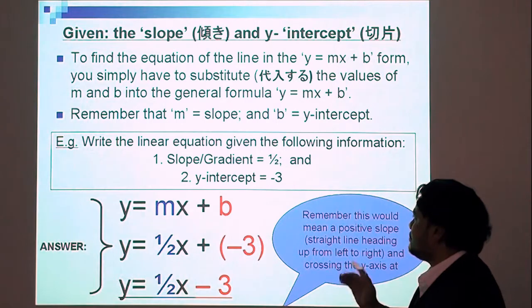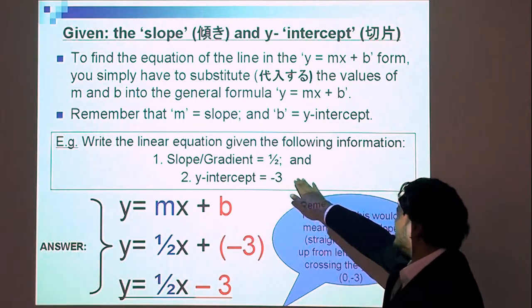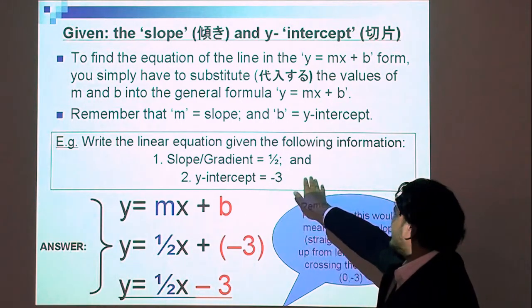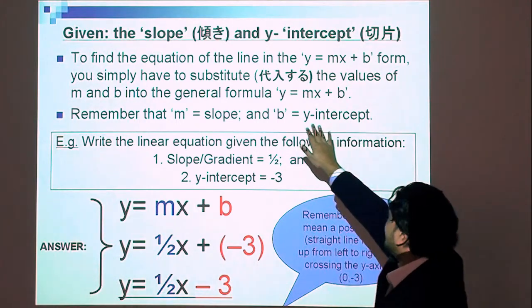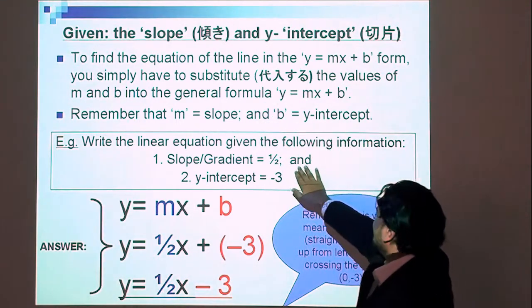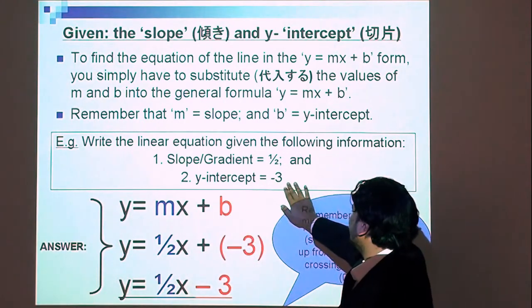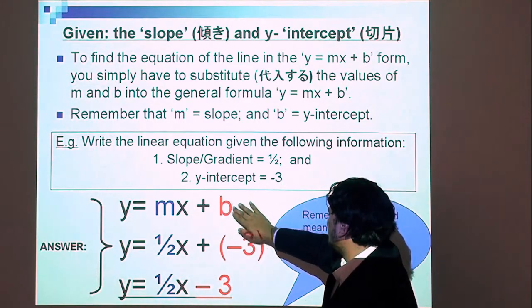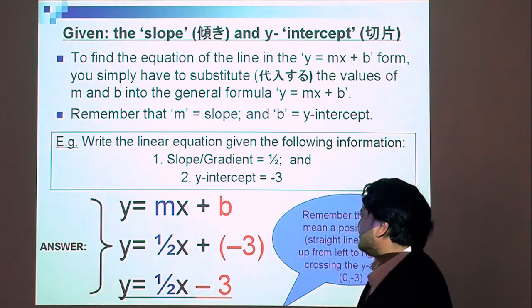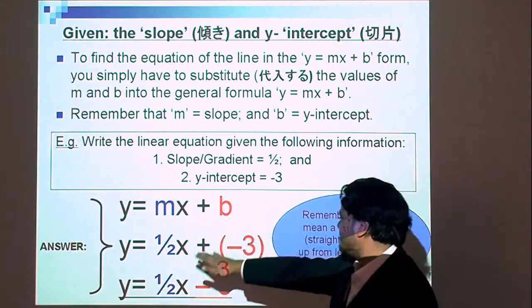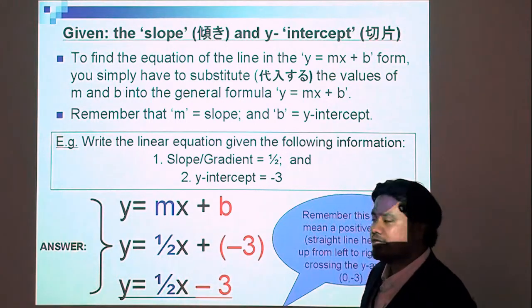Here's an example: write the linear equation given the following information. We are told that the slope or gradient is one-half, and the y-intercept is negative 3. So what do we do? We substitute — we move that value for the slope where m is, and we take the y-intercept, which is negative 3, and plug it in where b is. Therefore, the general equation y equals mx plus b becomes y equals one-half x minus 3.